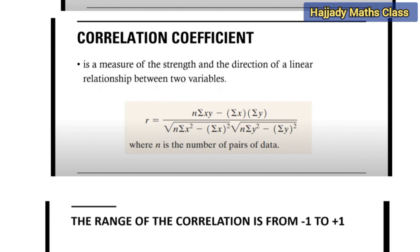And for our correlation coefficient, this is the formula given to us. R represents the correlation coefficient. N is the number of observations or number of pairs of data. We have our variable x and our variable y. The definition of correlation is a measure of the strength and the direction of a linear relationship between two variables.